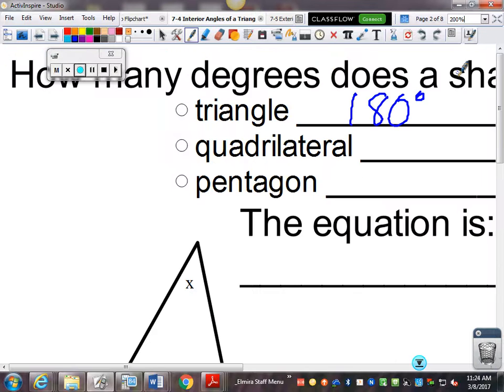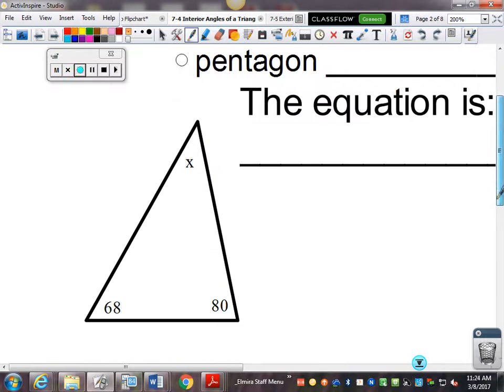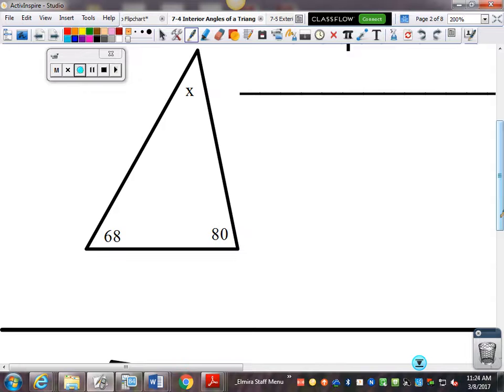So, if I was looking at this triangle right here, and I know this angle is 80, and this angle is 68, and I want to know what x is, because I know they add up to 180, so I'll work backwards. They add up to 180. If I subtract off 80, and I subtract off 68, I get 32.